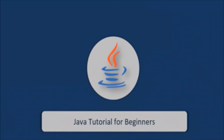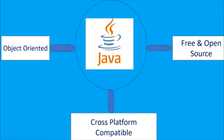All these topics will be covered in this video. Basically, Java is a programming language which was first released by Sun Microsystems in 1995. It was developed by a team within the same company. The three key aspects of Java are: Java is object-oriented programming, Java is cross-platform compatible, and Java is free and open source.